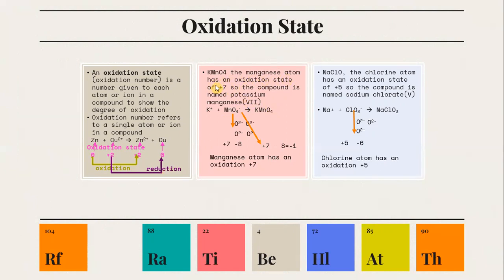For KMnO4, the manganese atom has an oxidation state of +7, so the compound is named potassium manganese(VII). In MnO4−, oxygen has an oxidation state of −2, and since it is repeated 4 times, the total is −8. Therefore, Mn plus −8 equals −1, meaning Mn carries an oxidation state of +7, since +7 + (−8) = −1.